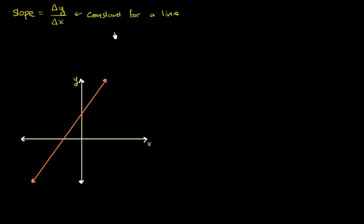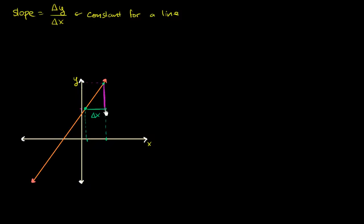What I want to do in this video is to actually prove that using similar triangles from geometry. So let's think about two sets of two points. Let's start at one point and end up at another. What is our change in x between these two points? This point's x value is here, this point's x value is here, so our change in x is that distance. And our change in y — this point's y value is here, this point's y value is here — so this height is our change in y.